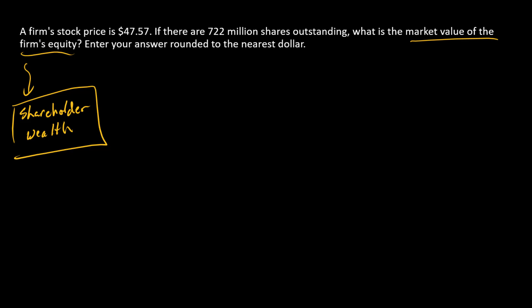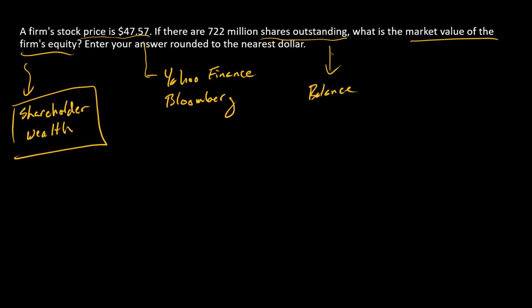The two pieces of information we're going to use are: first, the firm's stock price, which you might get from a stock quote using a source like Yahoo Finance or Bloomberg. And then we also have the number of shares outstanding, which is directly from a firm's balance sheet. You can also get this information from the same place you got the stock quote — pretty easily from Yahoo Finance or Bloomberg.